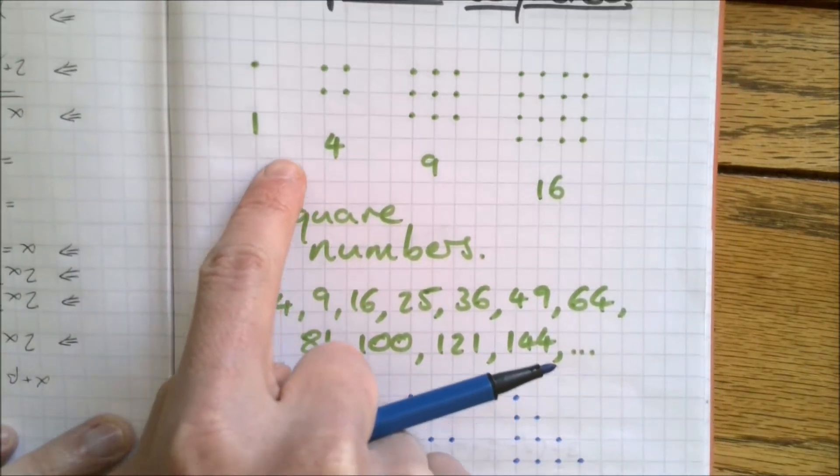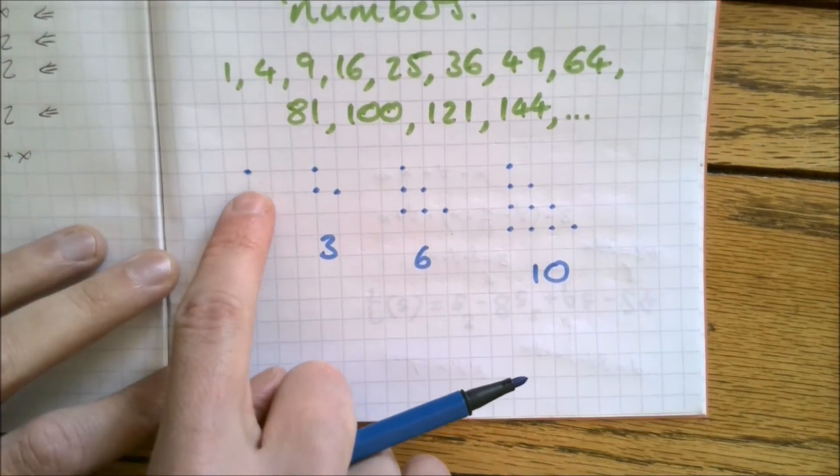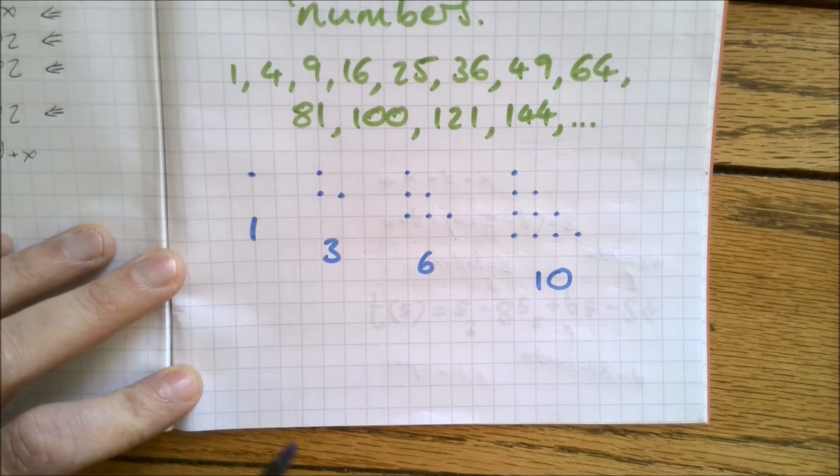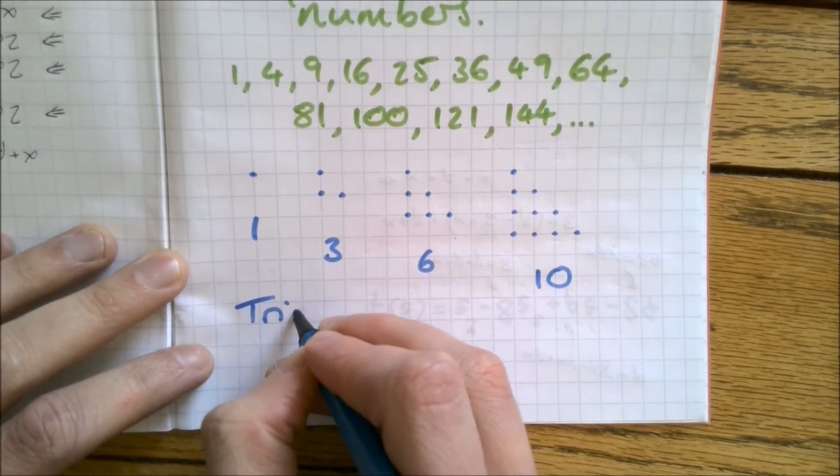And the next one after that, the fourth one is 10. Now maybe, since these ones are called the square numbers, you might be able to have a guess as to what these ones are called. You're right. They're called the triangular numbers.